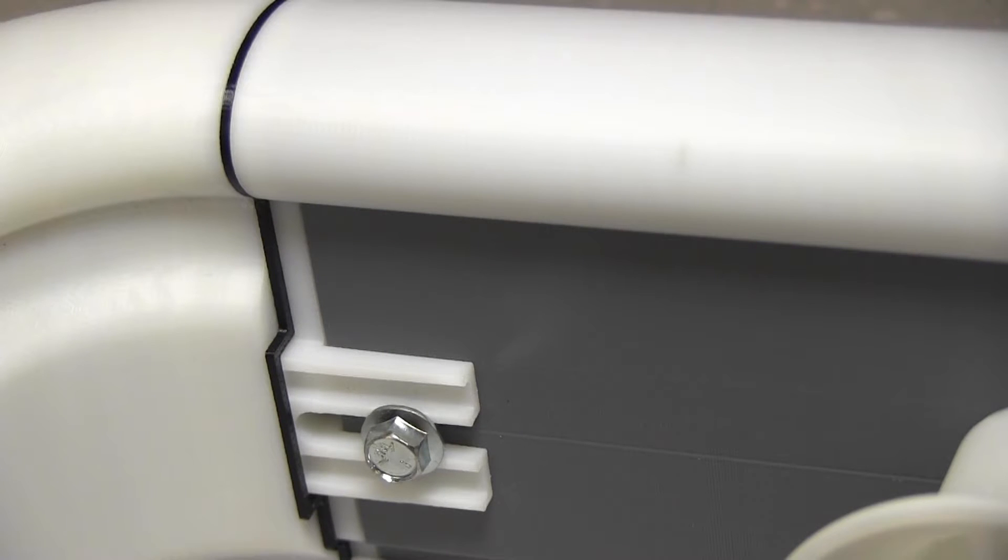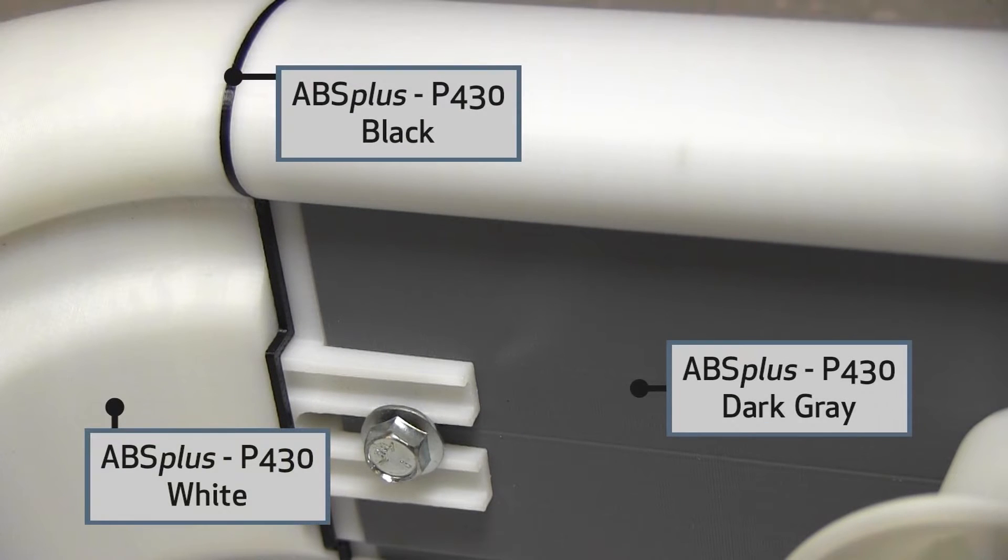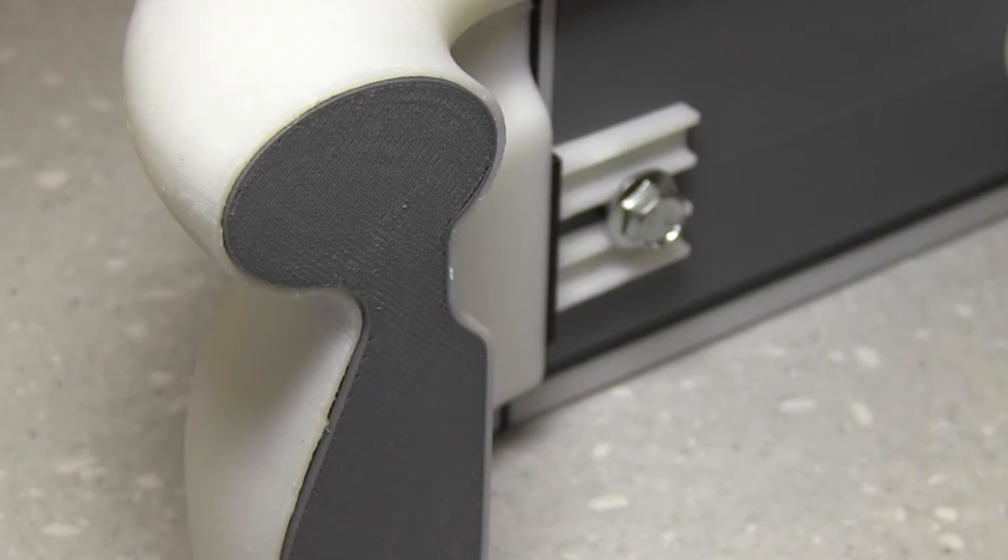A lot of our parts are systems with multiple components. By having certain components of different color, it allows us to actually see the fit, form, and function much better and understand the tolerances that are needed in order to produce a good design part.